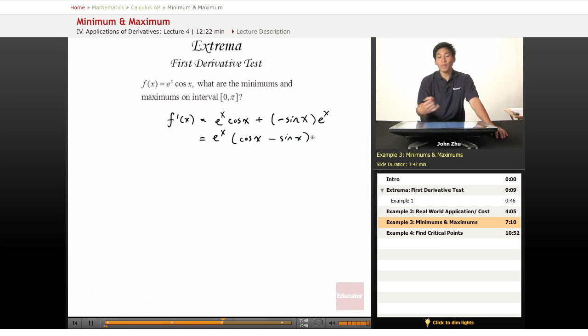But we're looking for a minimum and maximum, so we're testing for critical values, critical points. So we set this equal to 0, and we end up with cosine of x equals sine of x. And this x can only be pi over 4, or 2 pi multiples of pi over 4.